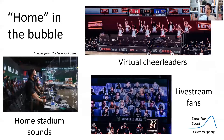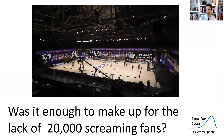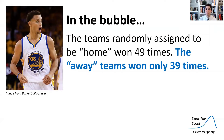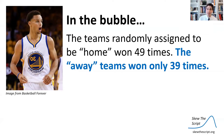The NBA tried to bring a bit of that home team advantage into the bubble. They had screens where they projected virtual cheerleaders for the home team, they live streamed fans watching the game for the home team, and they even tried to play the same sounds as the home stadium arenas. But the question is, was it enough to make up for the lack of 20,000 screaming fans? Could they actually bring the home court advantage into the bubble? In the bubble, the teams randomly assigned to be home won 49 times, and shockingly, the teams randomly assigned to be away only won 39 times. So the question is, is this convincing evidence of a real home advantage in the NBA bubble?